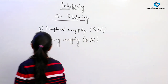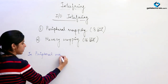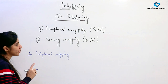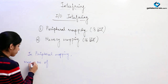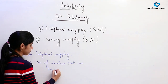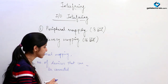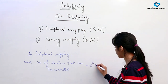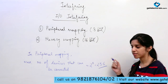In peripheral mapping, we are going to connect devices like keyboard, monitor, whatever you are going to connect, and they are going to have 8-bit addresses. Since the address of each device is 8 bits long, the maximum number of devices that can be connected is 2 to the power 8, or 256. This is a limitation with peripheral mapping — only 256 devices maximum can be connected.